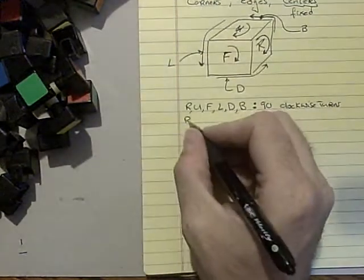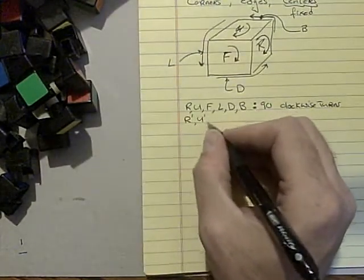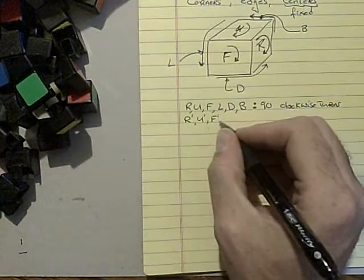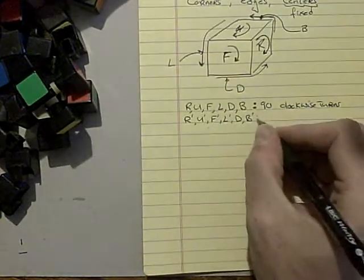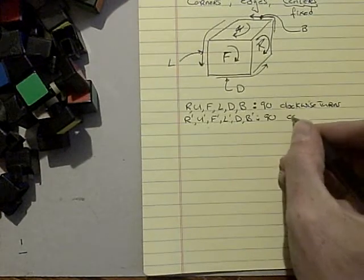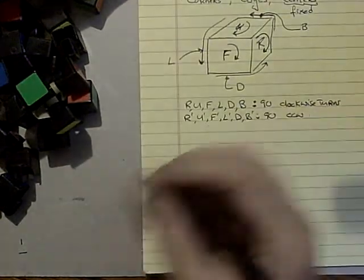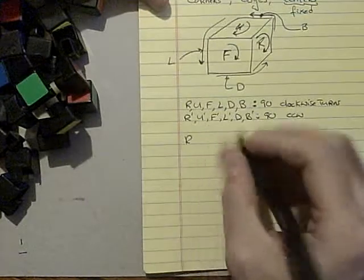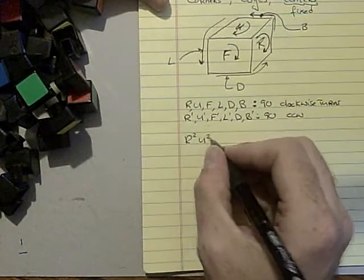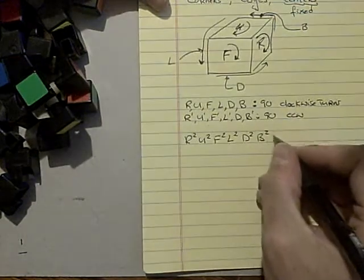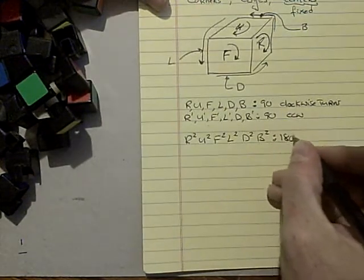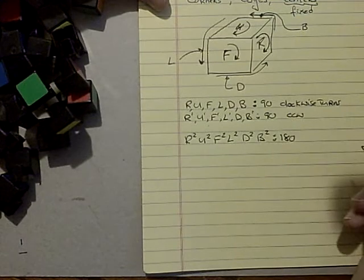And then any of these with a prime or negative one as an exponent. So, these are 90 counterclockwise. And you'll also see R squared, U squared, F squared, L squared, D squared, B squared. And these are 180 degrees. And it doesn't matter which way you go.